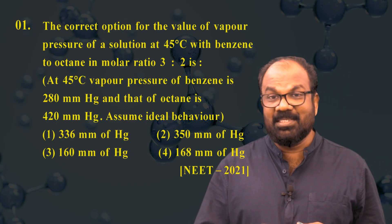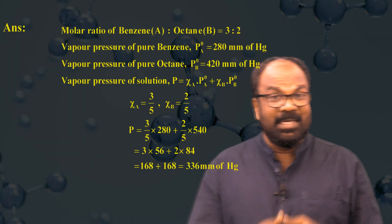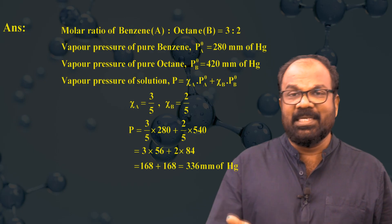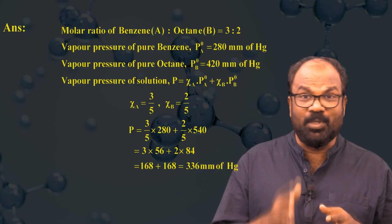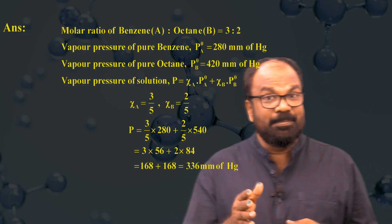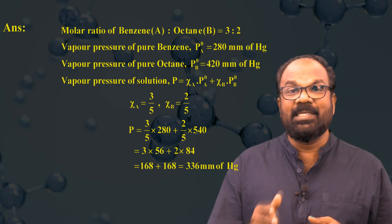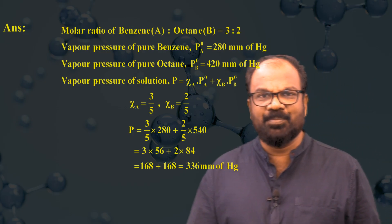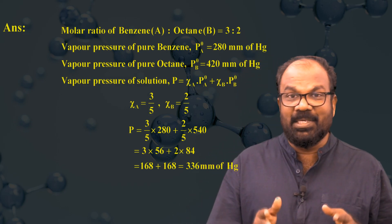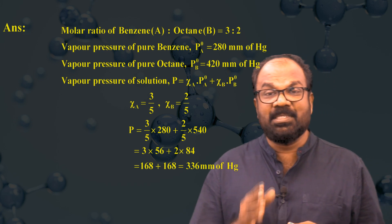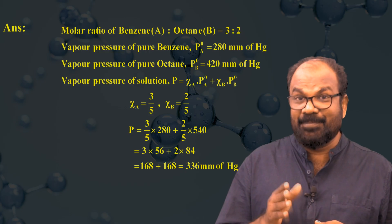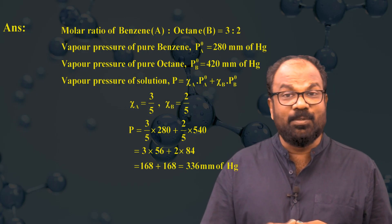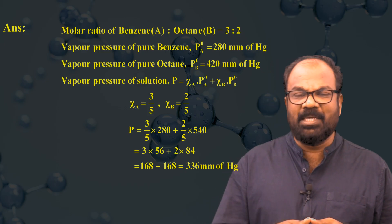An ideal solution is prepared by dissolving benzene and octane. For convenience, represent benzene as A and octane as B. The molar ratio of benzene to octane is 3:2. Vapor pressure of pure benzene P°A = 280 mmHg, and vapor pressure of pure octane P°B = 420 mmHg. According to Raoult's Law, vapor pressure of the solution P = χA·P°A + χB·P°B, where χA is the mole fraction of benzene and χB is the mole fraction of octane. Here χA = 3/5 and χB = 2/5.